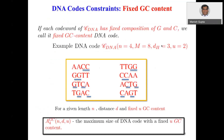Another constraint is fixed GC content: if each codeword of C_DNA has a fixed composition of C and G, we call it a fixed GC content DNA code. This is a special case of constant composition codes. For given length n, distance d, and GC content u, A_4^{cg}(n, d, u) is the maximum size of a DNA code with fixed GC content u.